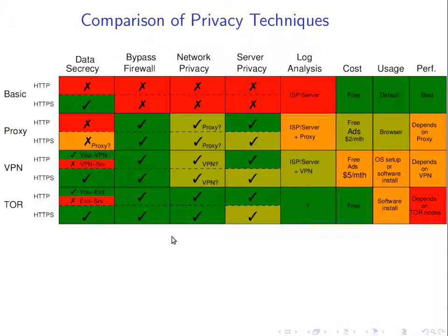To finish, here's a comparison of four approaches: basic internet access with HTTP or HTTPS, web proxy, VPN, and Tor. The comparison covers data secrecy, bypassing firewalls, network privacy, server privacy, log analysis, and convenience factors like cost, ease of use, and performance.